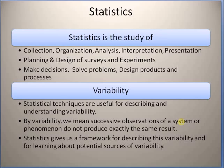By variability, we mean that different observations do not have the same value — that is, observations of processes in the real world do not have the same value. As a result, we see different values for each observation within a sample. The discipline of statistics basically gives us a theoretical framework for understanding this variability.